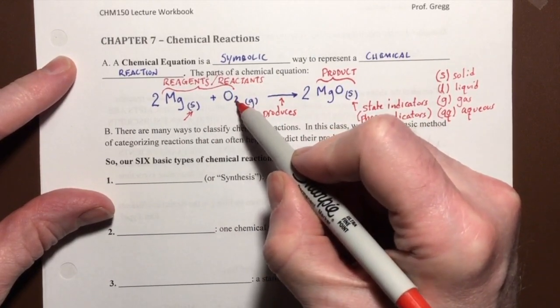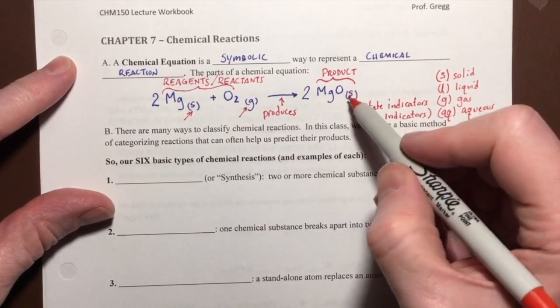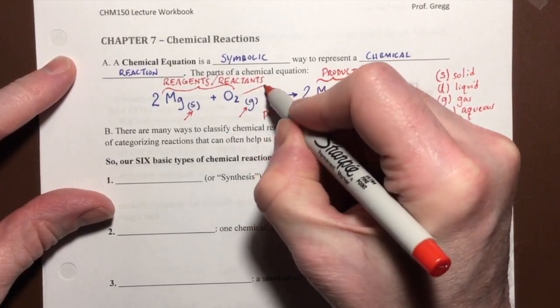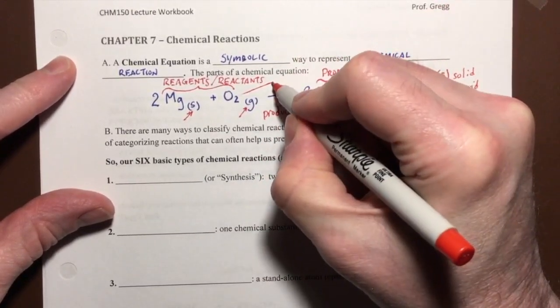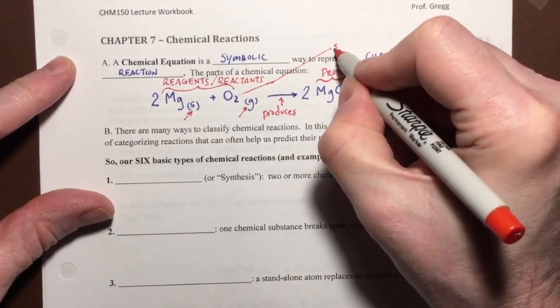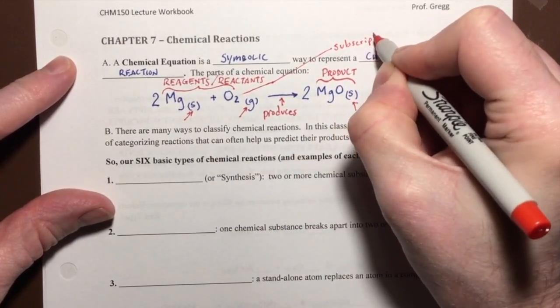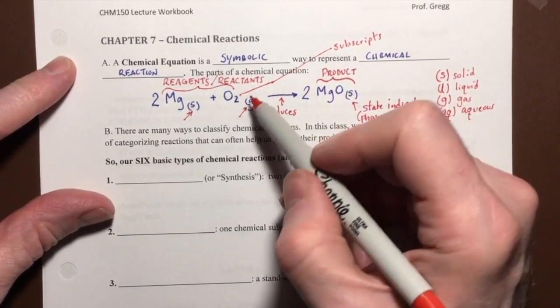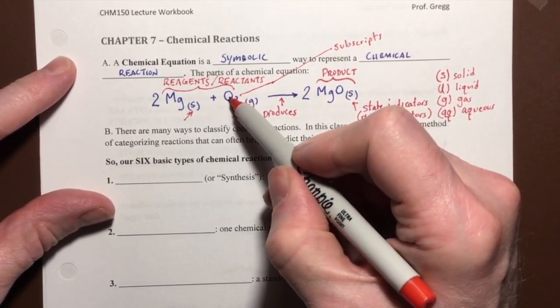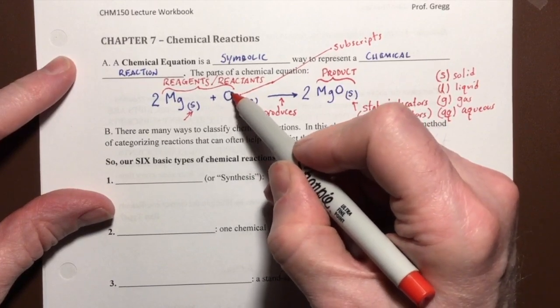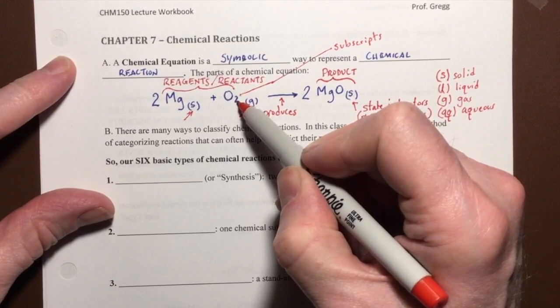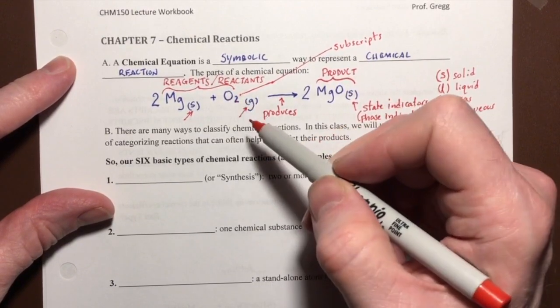These smaller numbers below the line of script are called subscripts. They let us know how many of the atoms that came immediately before it in the formula are present.